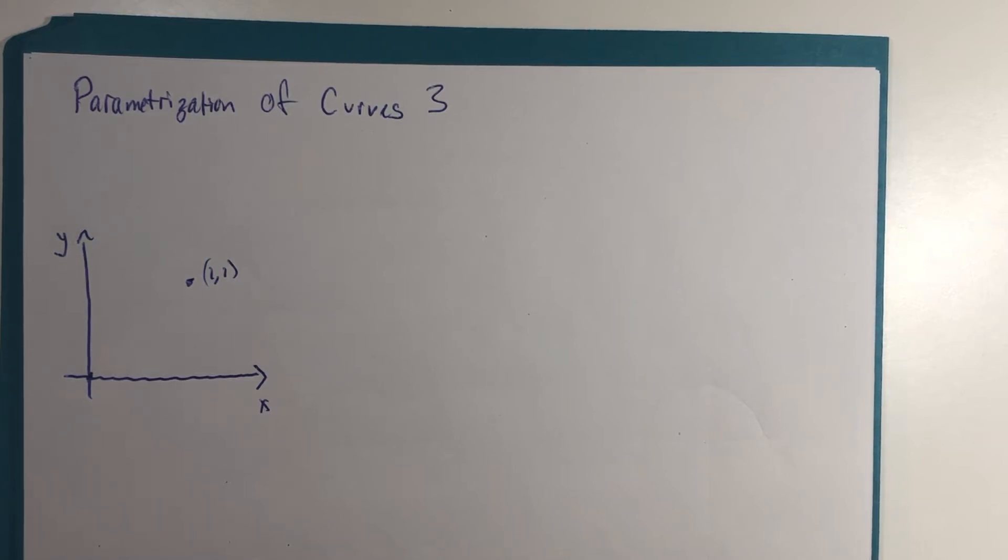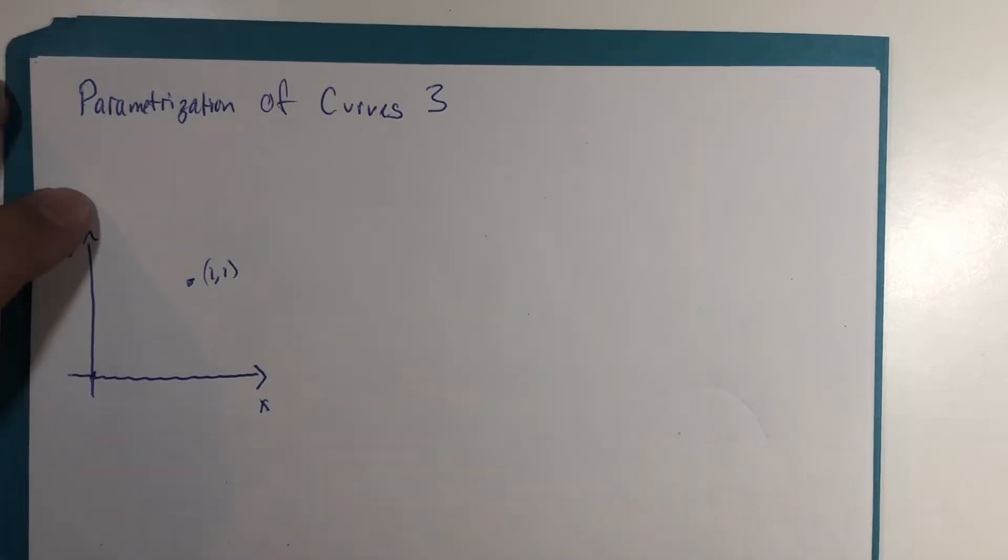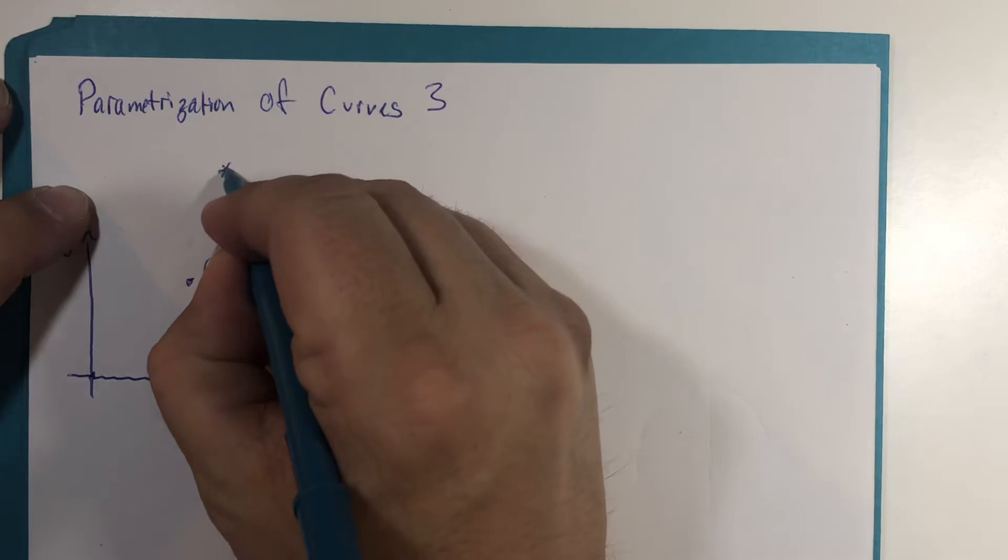Let's look at another example of parametrization of curves or writing the vector form for a curve. This particular example will play a more significant role a little bit later in the chapter with one of our key theorems in multivariable calculus. So I've got a graph grid setup and I'll put the title of what I'm doing here in just a moment.